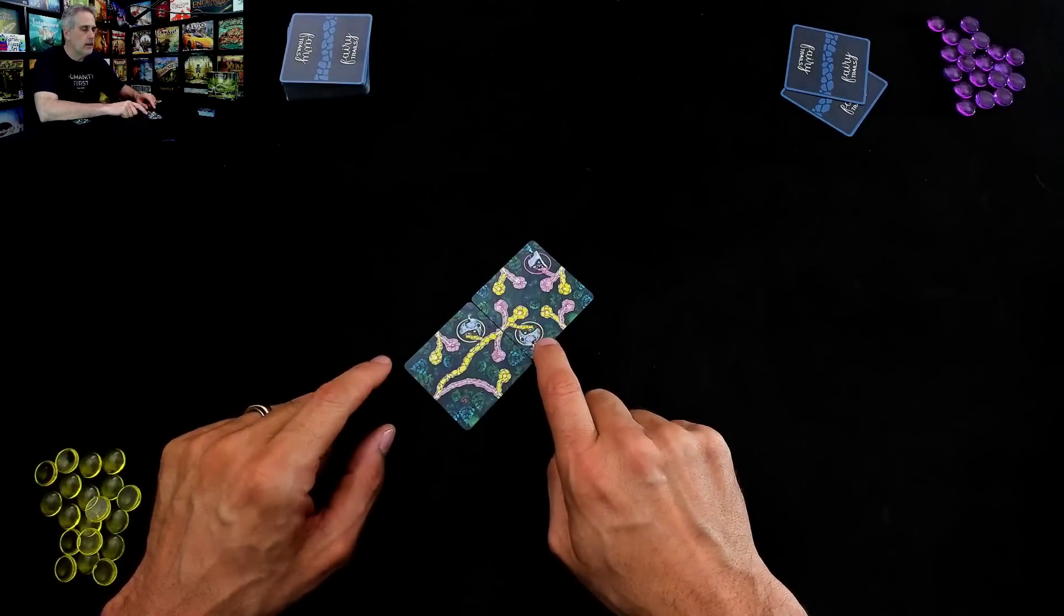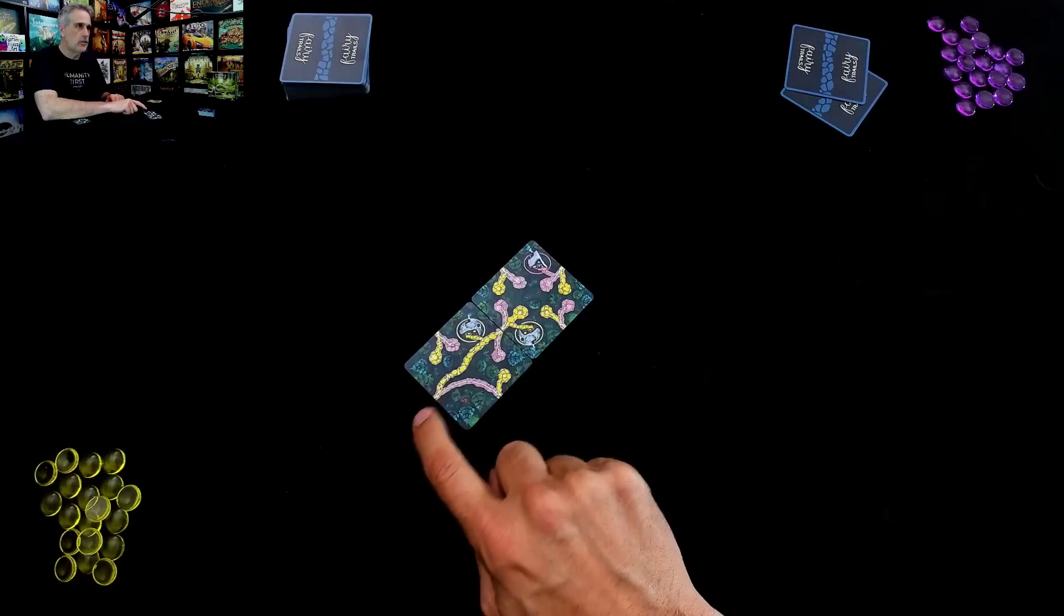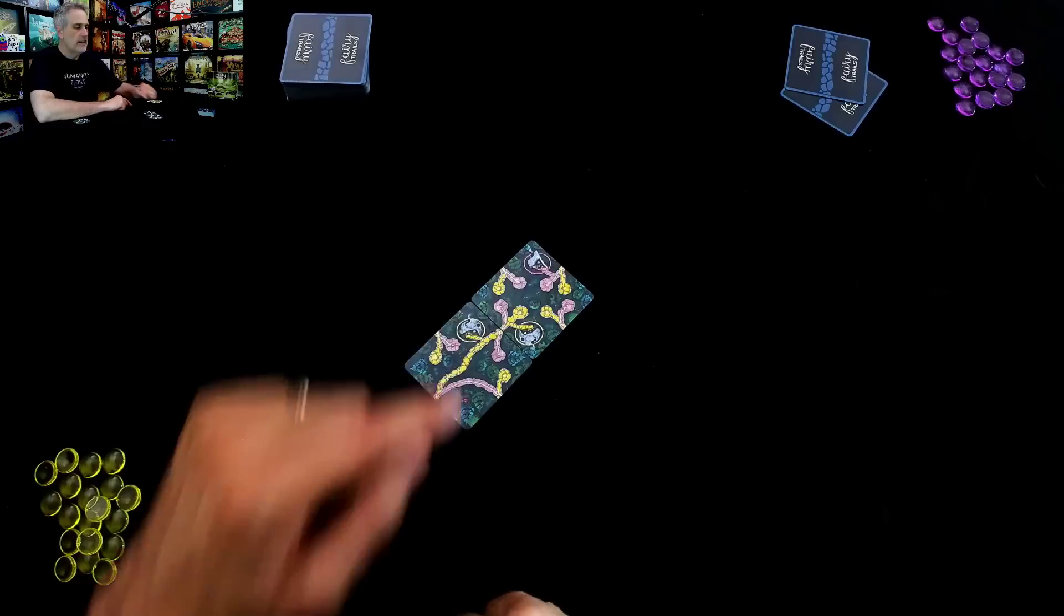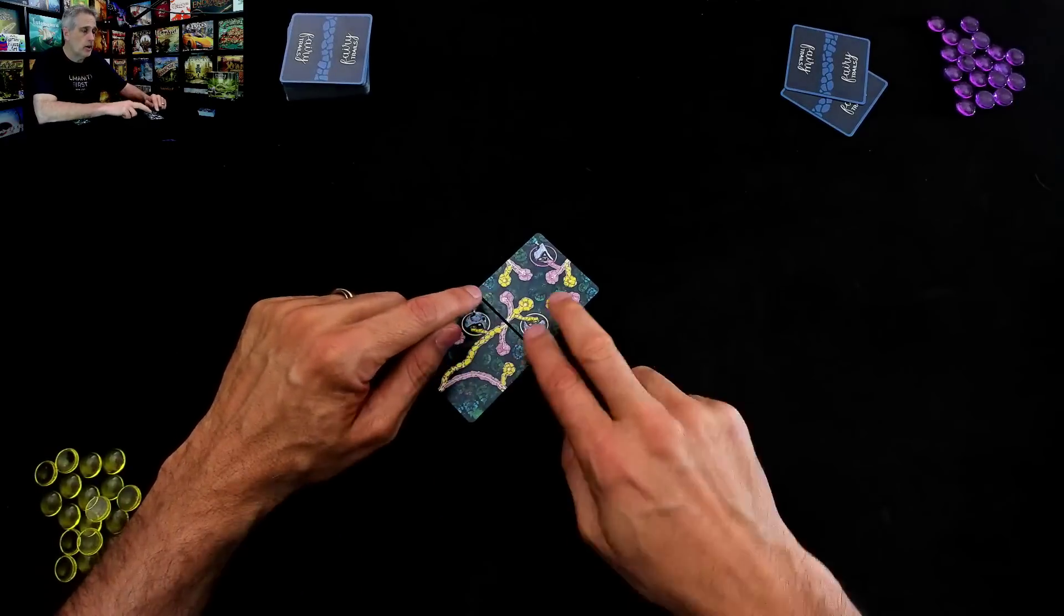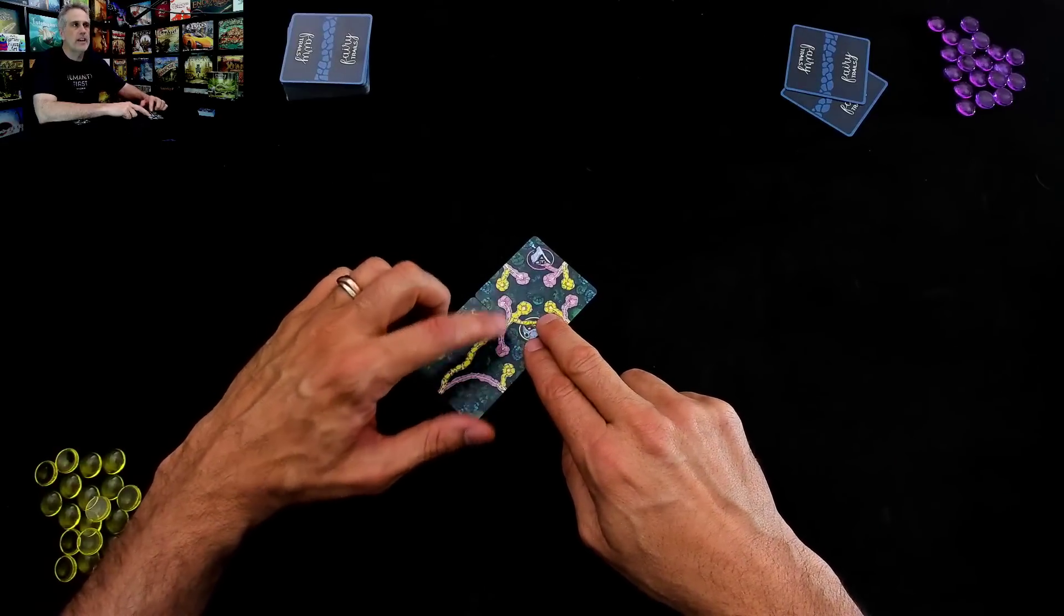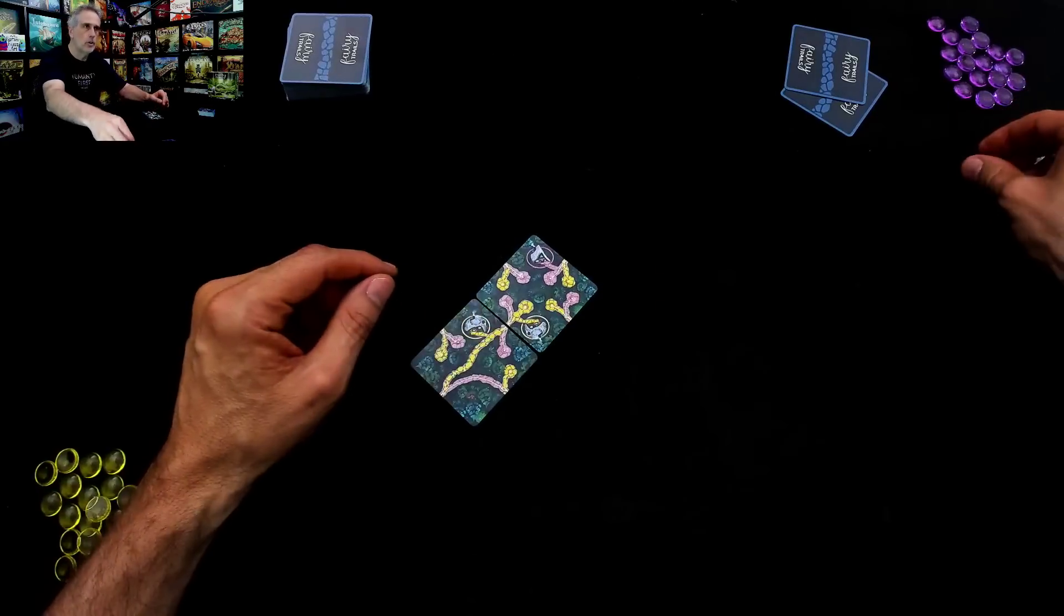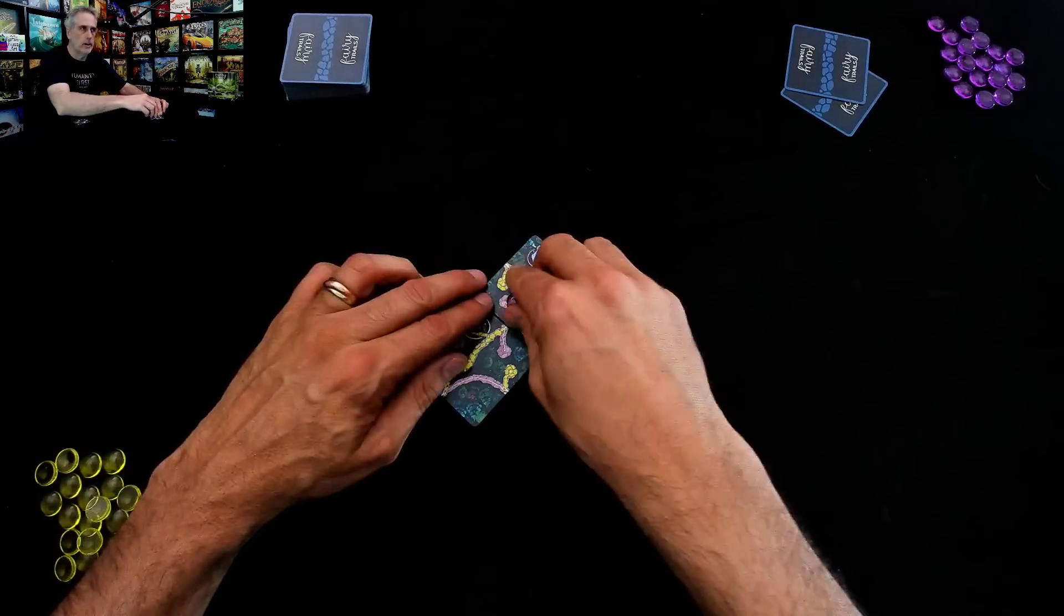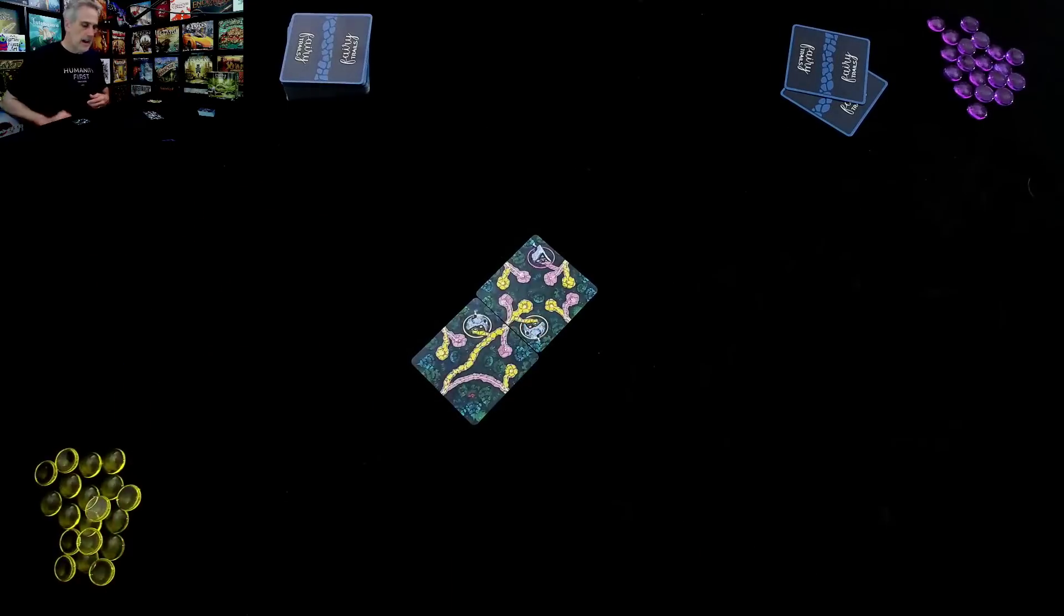Now, this yellow trail has two of my houses on it and it can continue to extend off in this direction. Now, this purple Elven Trail right here, it is now closed. It's just been cut off. It will never be expanded. And if there was a house on this closed purple trail, that house would get built by putting a little token on it. But as it is, that trail got closed. It doesn't really affect anything. And my turn is over.